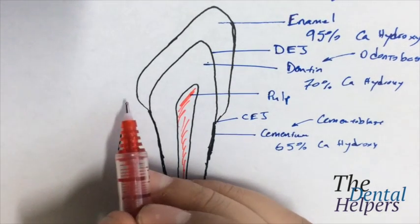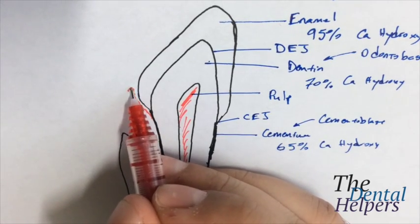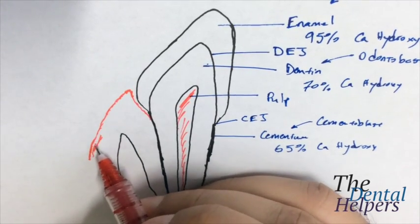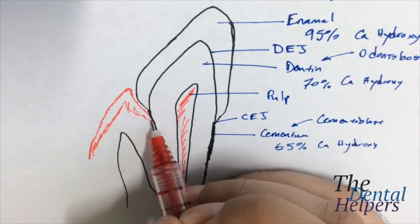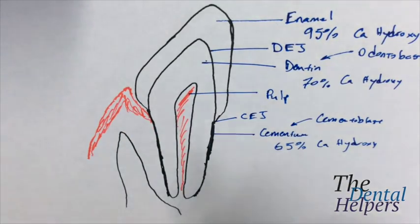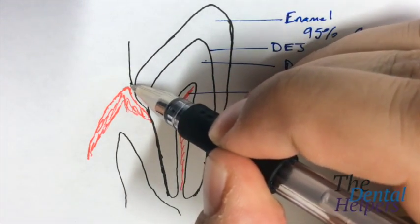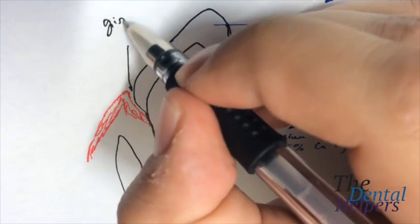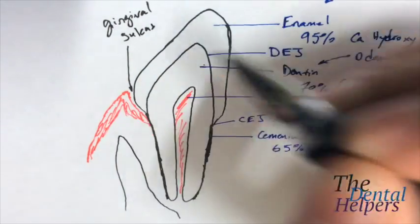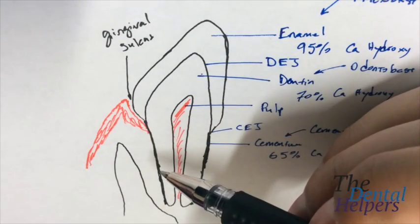We also have gingiva, or you know, in layman's, gums. And so, if you notice, I drew a little space right here. And that little space is called the gingival sulcus. The sulcus is typically one to three millimeters in depth for a healthy individual.